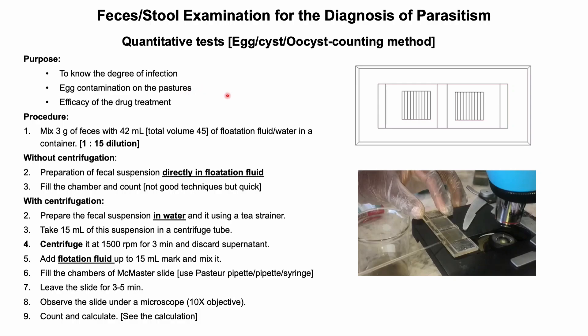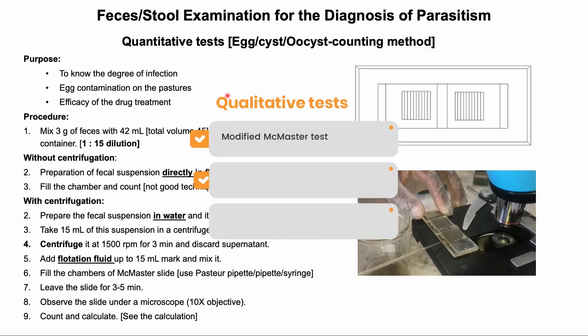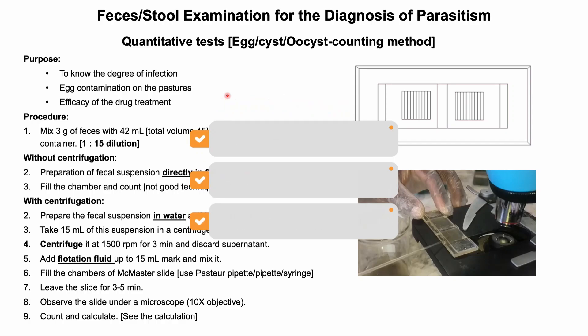There are a few quantitative tests available: the modified McMaster test, the modified Stoll test, and the Cornell-Wisconsin egg counting test. The easiest is the modified McMaster test. This test requires a special reusable McMaster slide, which can be purchased from different suppliers worldwide. A saturated salt solution is required as the flotation fluid to perform the test.